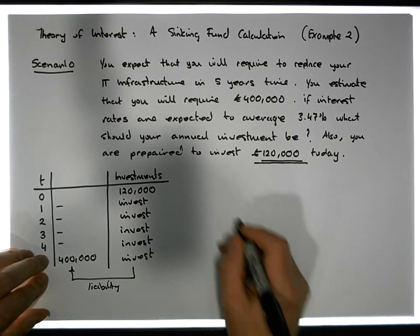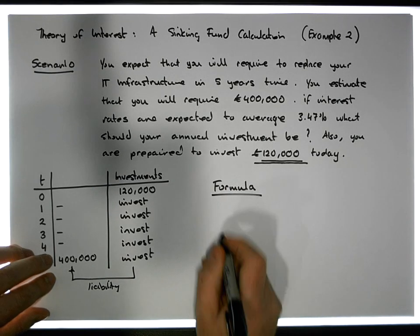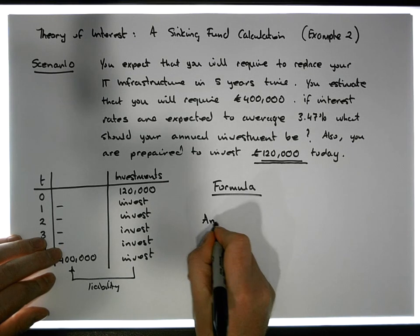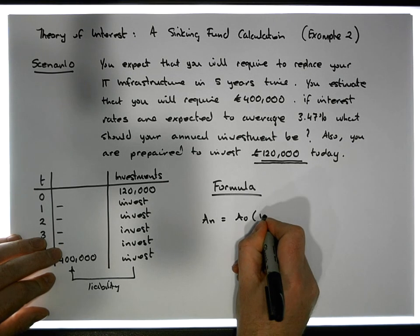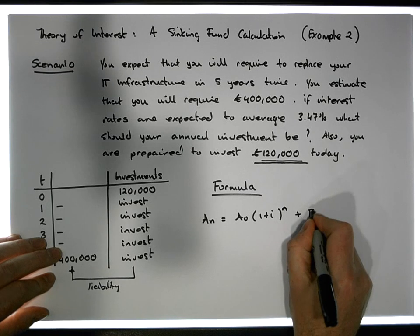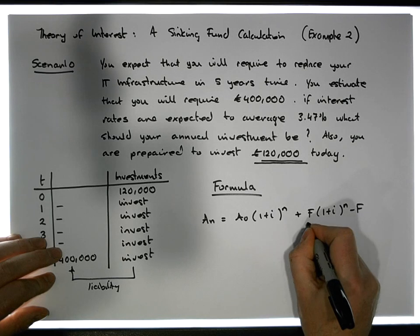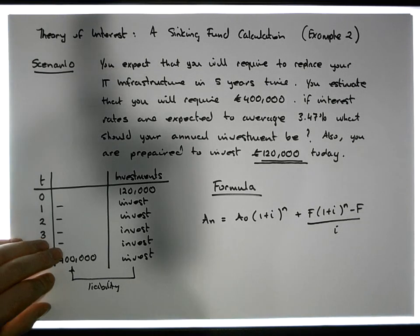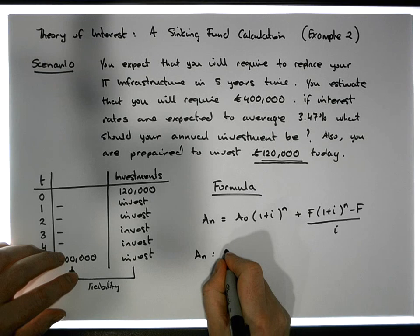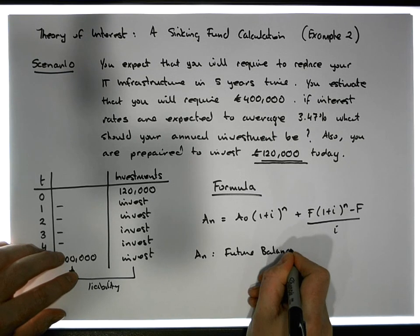Let's show the formula we're going to use — we've developed and provided a derivation in a previous video. It states that Aₙ = A₀ × (1 + i)ⁿ + f × [(1 + i)ⁿ − 1] / i, where Aₙ is the future balance.